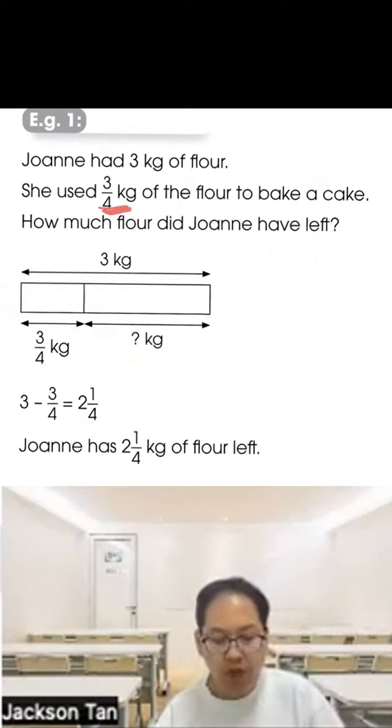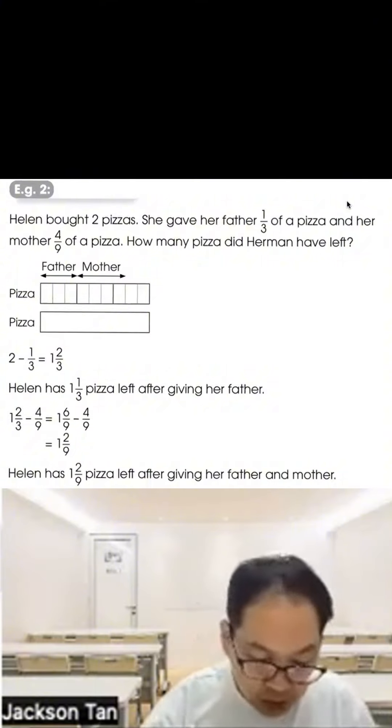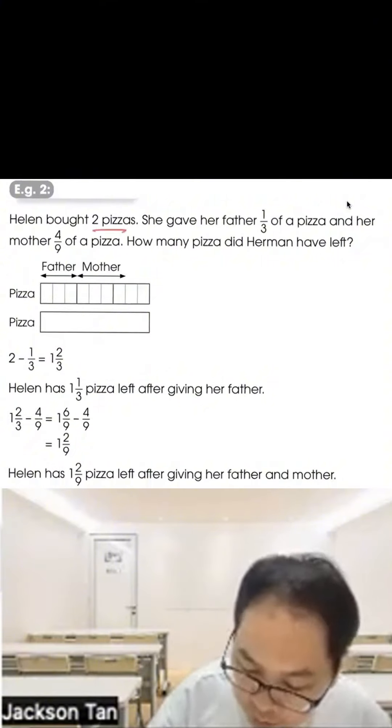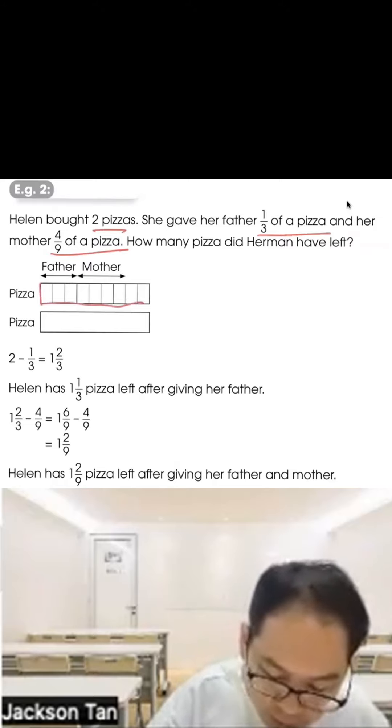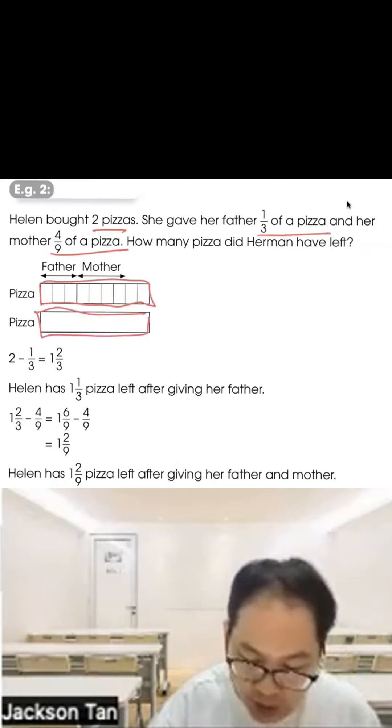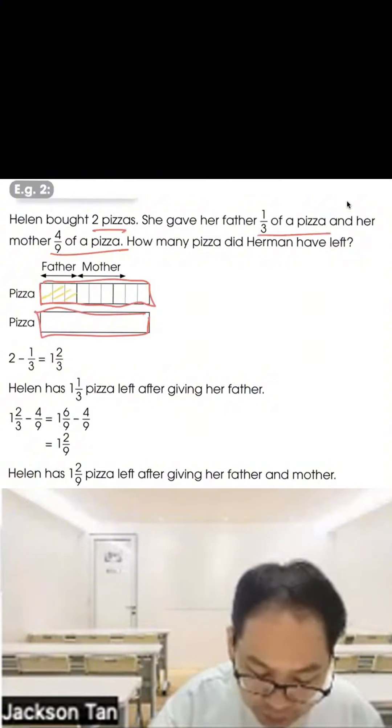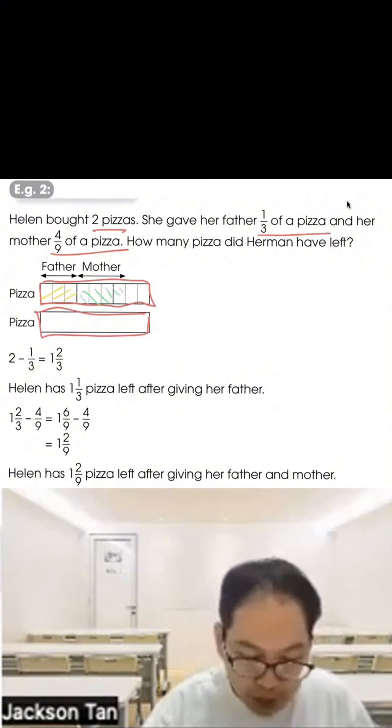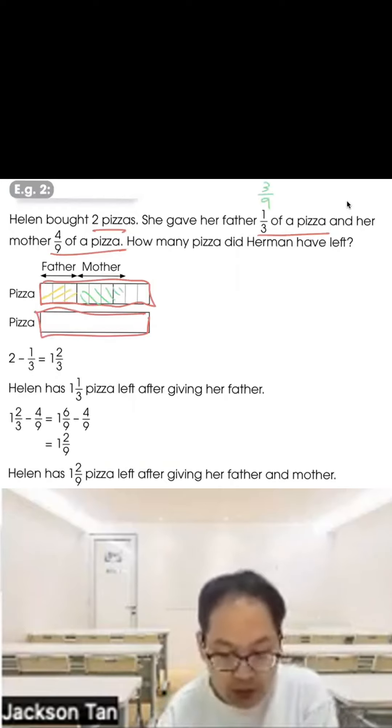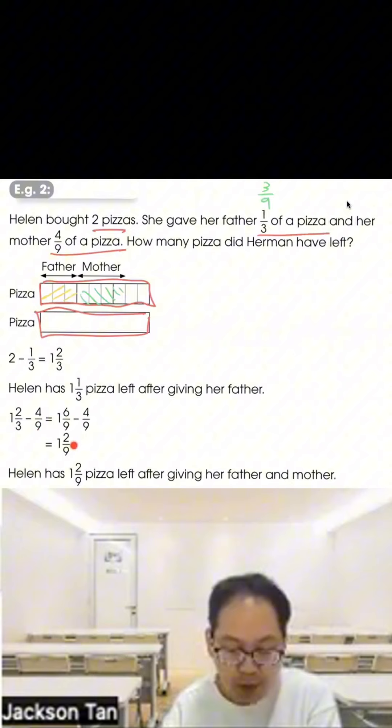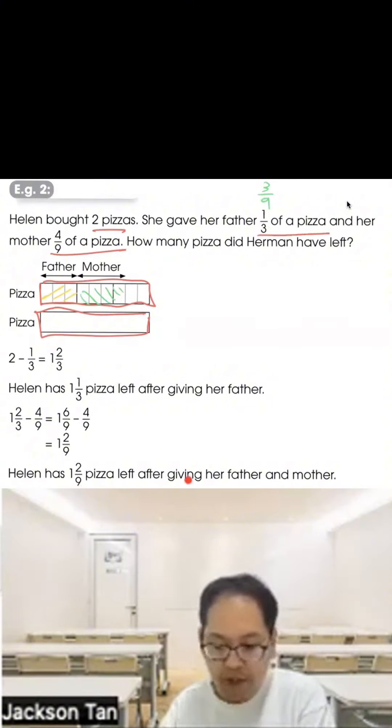Helen bought two pizzas. She gave her father one third of a pizza and her mother four ninths of a pizza. How many pizzas did Helen have left? I have two pizzas, one here, the other one here. Divide into nine parts. For the father, one third, which is also three ninths. Minus the mother, four ninths. You get one and two ninths. So Helen has one and two ninths pizzas left after giving to father and mother.